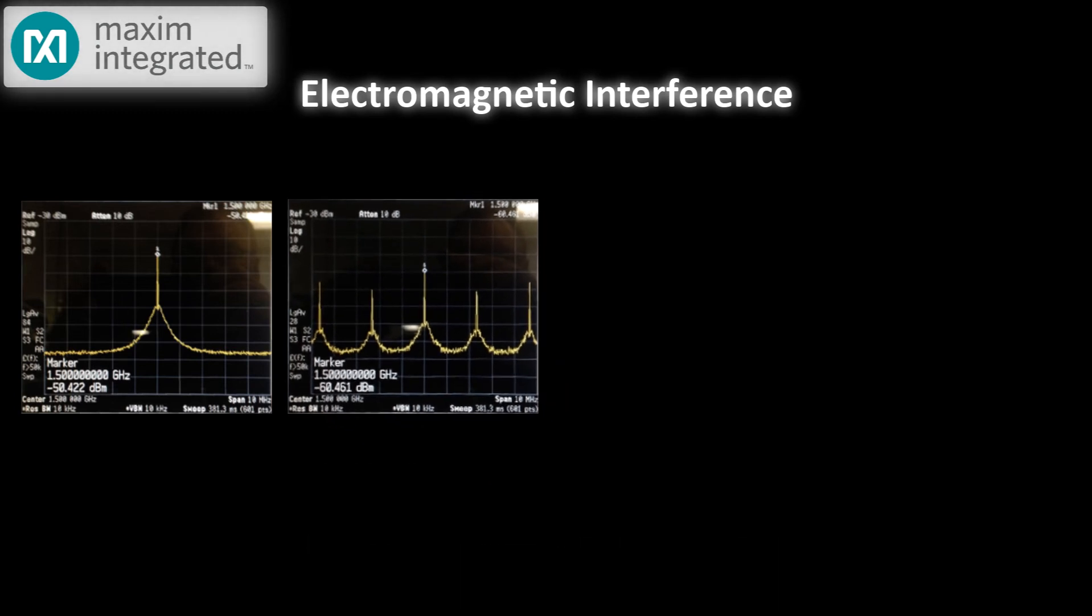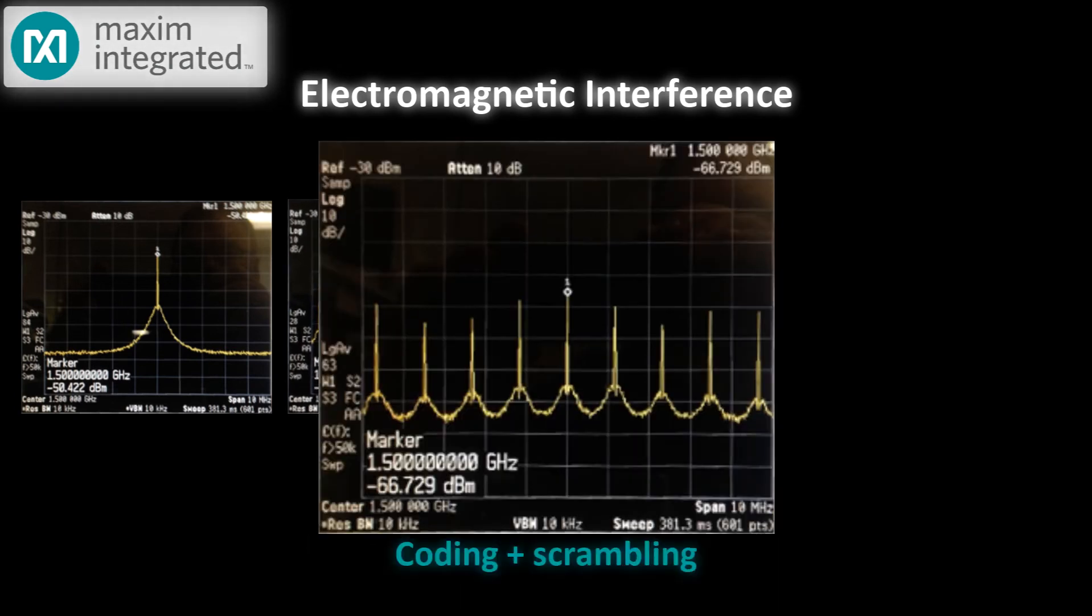Now, let's turn on the coder. Right off the bat, we see that there are more peaks, but we also see that the central peak has been reduced another 6 dBm. Obviously, coding and scrambling have had a positive effect on EMI, but looking at all these peaks, one can't help but think that there's more that could be done.